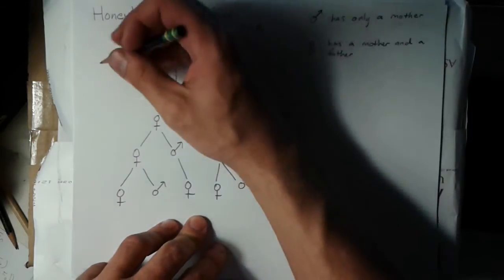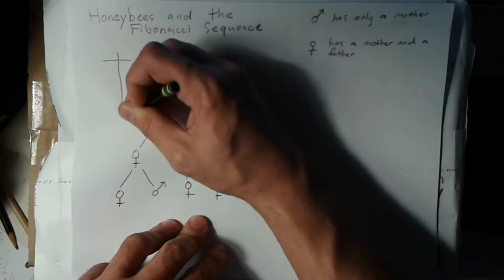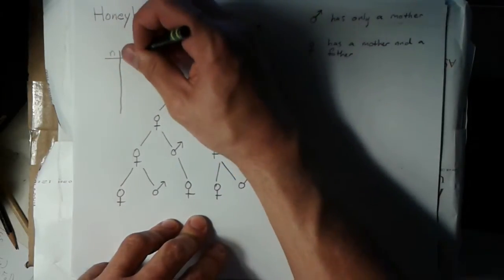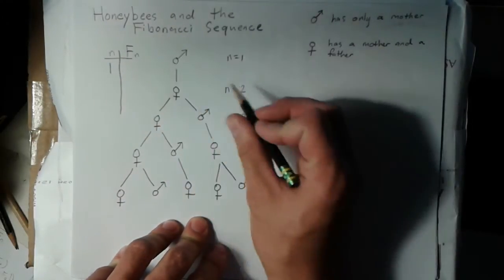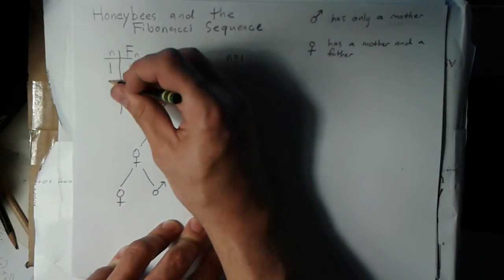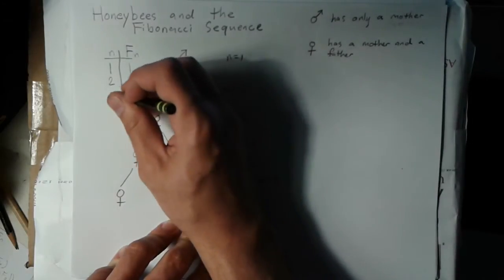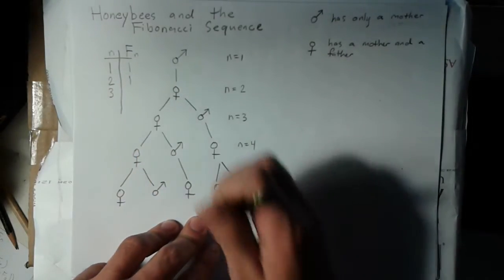I could make a table of how many bees are in each generation. If I call F of n the amount of bees in each generation, then in the first generation there was one, in the second generation there was one, in the third generation back there were two.